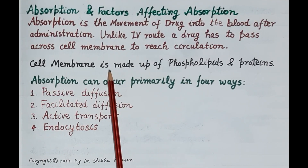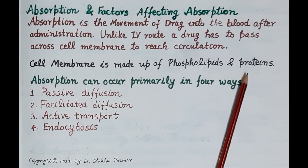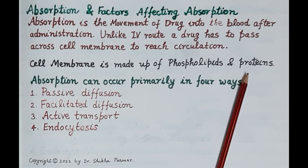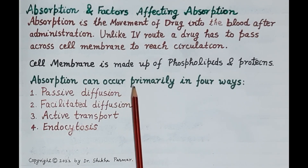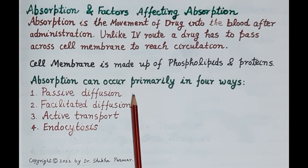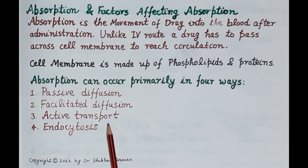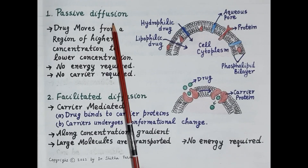All cell membranes in the body are made up of phospholipids and proteins. The wall of the stomach is also made up of phospholipids, so a drug has to cross the cell membranes in order to reach blood circulation. Absorption or transport of drug across a cell membrane occurs primarily in four ways: passive diffusion, facilitated diffusion, active transport, and endocytosis.